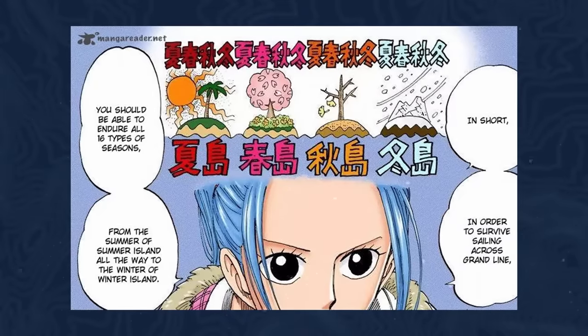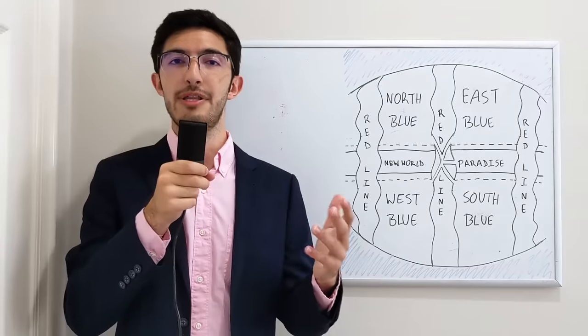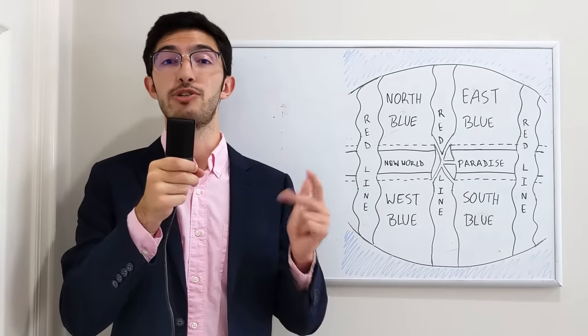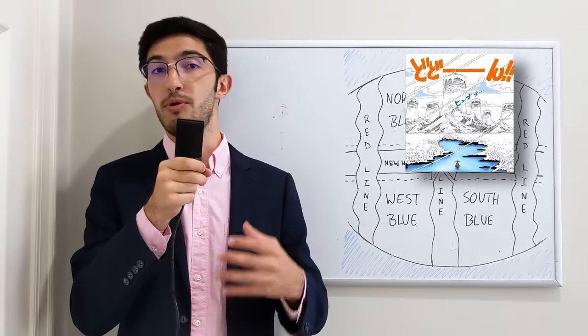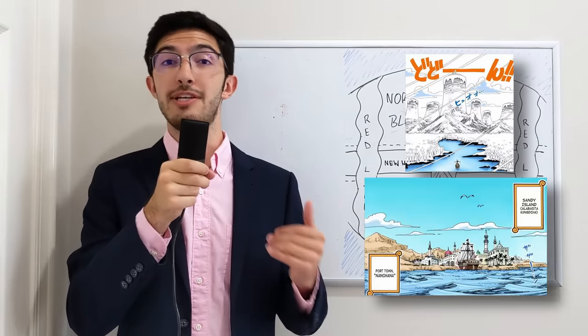However, in the Grand Line, even within a specific island, you can't actually have seasons, so you can have a summer island that has a summer, winter, spring, and fall, and a winter island that also has a summer, winter, spring, and fall. And it would essentially mean that the summer in a winter island would be warmer than a winter, but it would still be colder than a summer on a summer island.